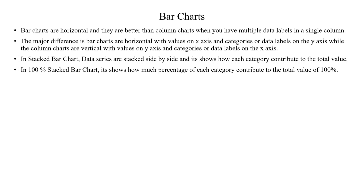With the 100% stacked bar chart, you can see how much of the total value each category represents as a percentage. For example, if we have 3 product categories — mobile phones, furniture, gadgets — and mobile phones generated 75% of the revenue, the remaining 25% fills out the 100% bar. Every category contributes to 100%.